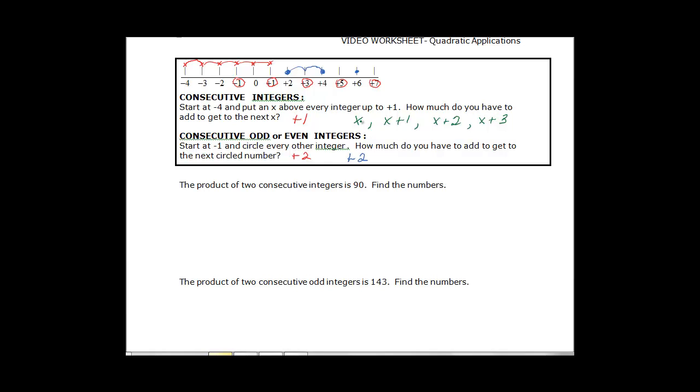So if I put 0 in here for X then 0 plus 1 would be 1, 0 plus 2 would be 2, 0 plus 3 would be 3 and I'm getting my consecutive integers.